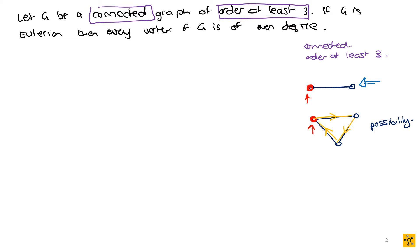We also need the graph to be connected. If you have a disconnected graph, is there any way to guarantee an Eulerian trail that covers all the edges? No, because the disconnect causes issues. So one of the guarantees for the possibility of an Eulerian graph to exist is that the graph needs to be connected — you need a path from every arbitrary vertex u to every arbitrary vertex v.